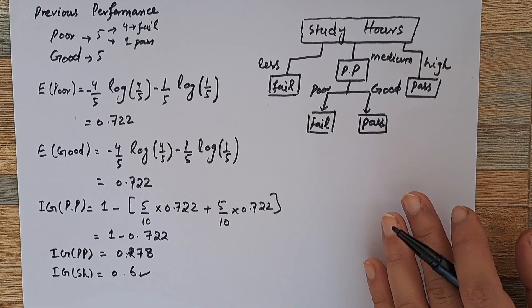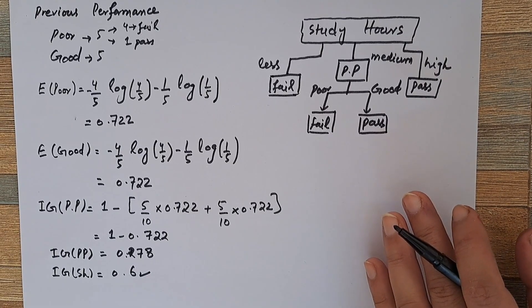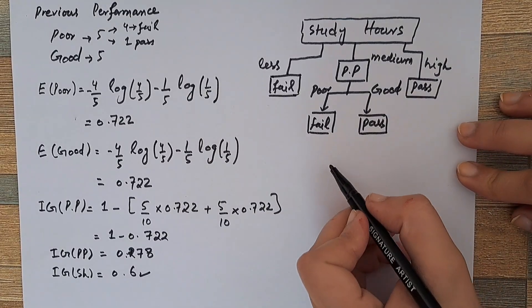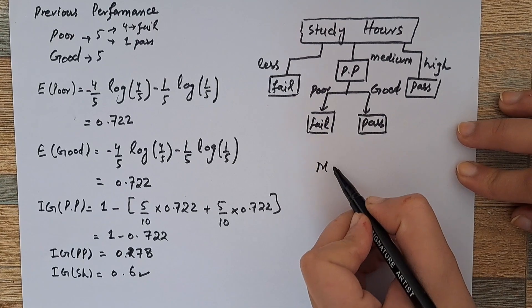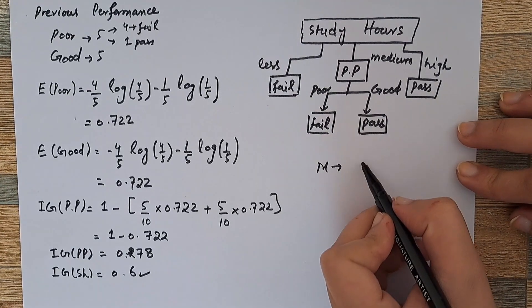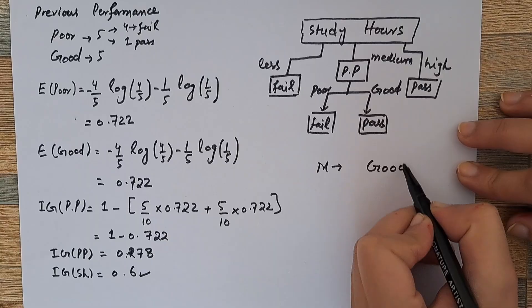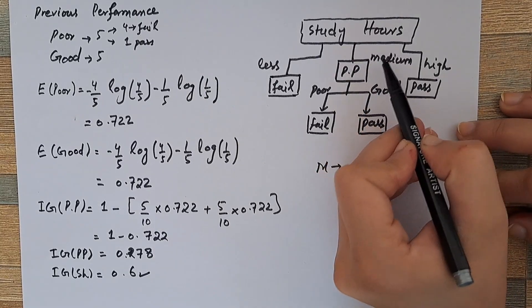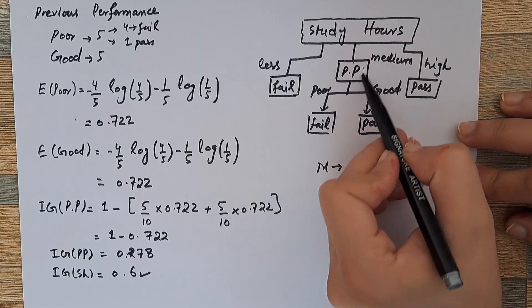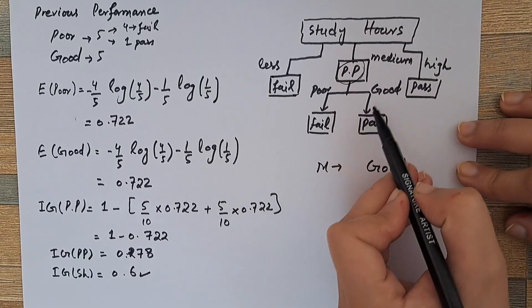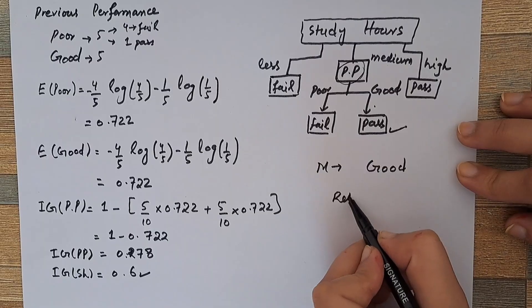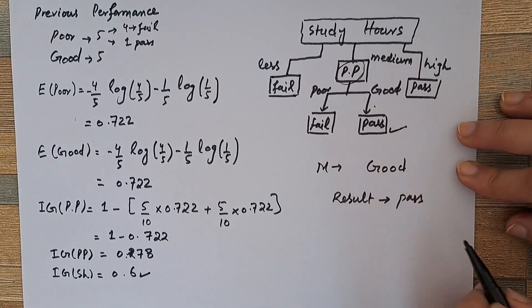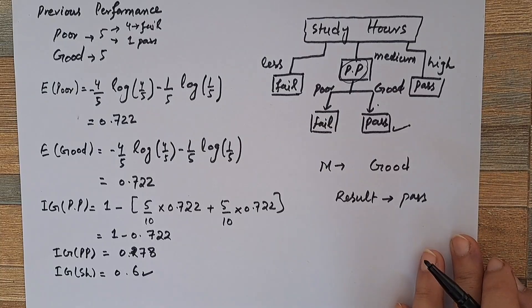Now consider a test scenario: a student studies for a medium number of hours and his previous performance was good. First, we go to the medium branch. Then, since his previous performance was good, he will actually pass the exam. Thank you for watching.